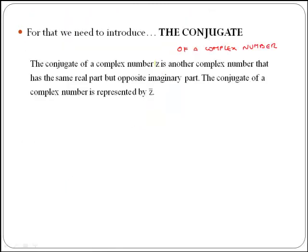The conjugate of a complex number z is another complex number that has the same real part but opposite imaginary part. In order to represent the conjugate of a complex number, we use a bar on top of the name of the original number.